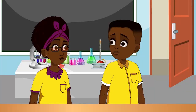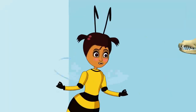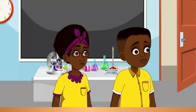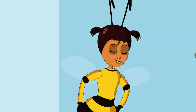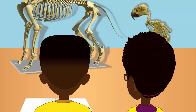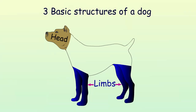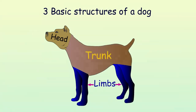These are skeletons of animals — they are kept here to study their parts. Like plants, animals also have a basic structure. Basic structure is how things are built, arranged, or organized. The basic structure of animals consists of the head, limbs, and trunk.